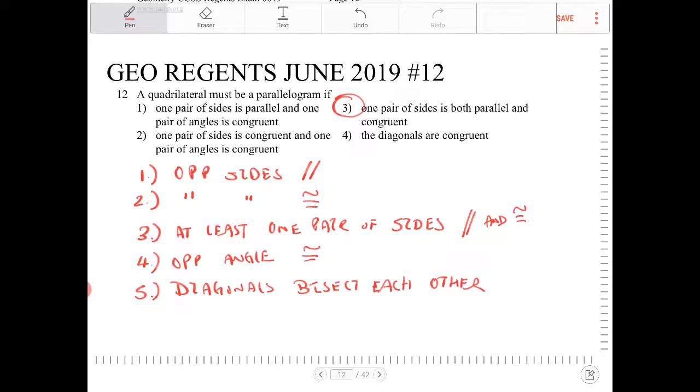And then number four: the diagonals are congruent. The diagonals can be congruent, but they don't have to be. This is true for, let's say, an isosceles trapezoid, which clearly is not a parallelogram.